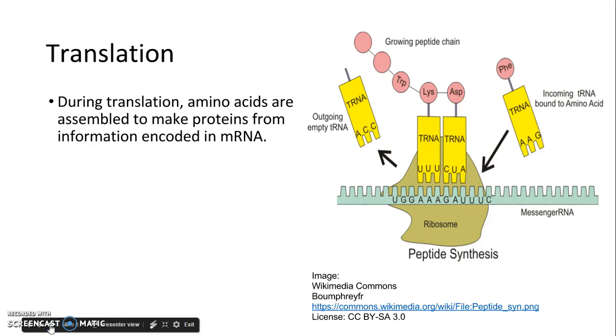So translation has three steps, similar to transcription. During translation, amino acids are assembled to make proteins from information encoded in mRNA. Here, this kind of shows you all the steps at once, except for the initiation step. You have your messenger RNA here. Ribosome comes, attaches to that, and it has these sites that the tRNA will bind to.